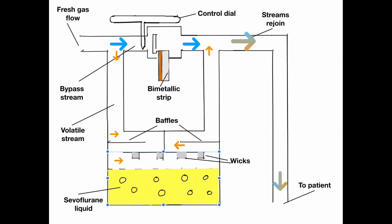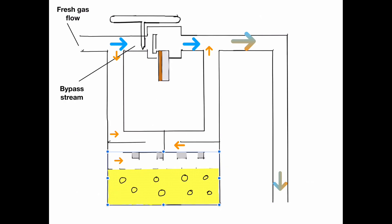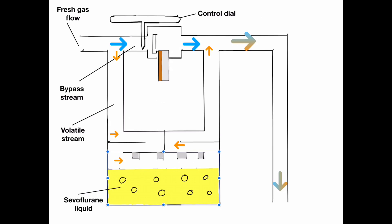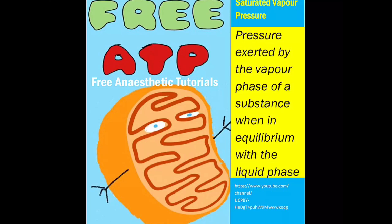As you can see there are a number of key components shown on this slide that we think are important. The fresh gas enters the vaporizer and is split into either the bypass stream or the volatile stream. The splitting ratio, which describes the proportion of fresh gas that enters the volatile chamber, is controlled by the splitting valve, and this connects and is calibrated on an external dial. The anaesthetist can use this dial to dial up the desired splitting ratio. The gas flows entering the vaporization chamber encounter liquid volatile agent, and as it travels past the volatile, evaporation occurs and this volatile will then join the gas flow to the patient. The vaporizer relies on the gas leaving the vaporization chamber being fully saturated and therefore exerting the saturated vapor pressure of the anaesthetic agent.